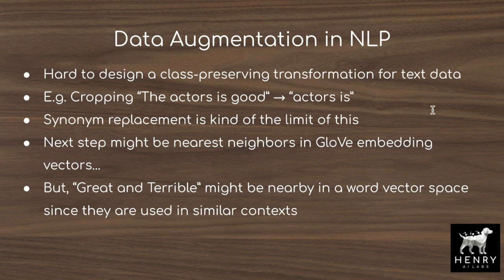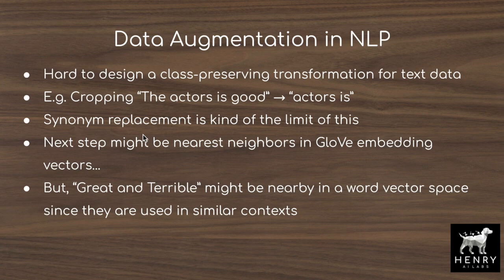But it's harder to design class-preserving transformations for text data and natural language processing. For example, if we take the popular cropping augmentation from images — taking 'the actors is good' and cropping to just 'actors is' — that doesn't make any sense. The limit of obvious data augmentations for NLP is synonym replacement: going to a thesaurus and replacing 'good' with 'great,' 'amazing,' 'awesome.' The next step might be looking at nearest neighbors in a GloVe embedding vector space, but there are problems — 'great' and 'terrible' would be nearby because they appear in similar contexts, making it hard to preserve labels.